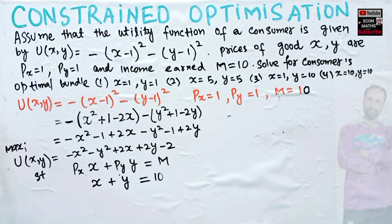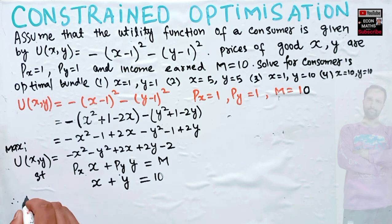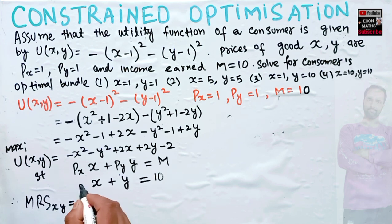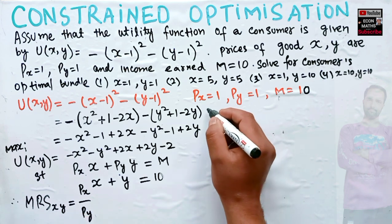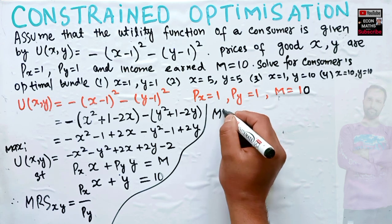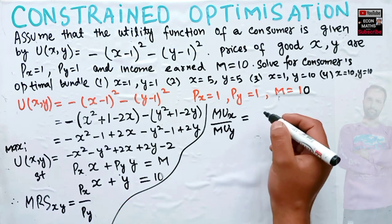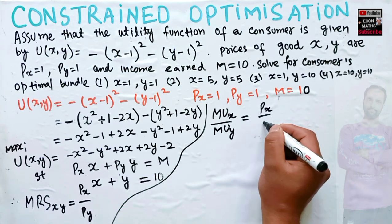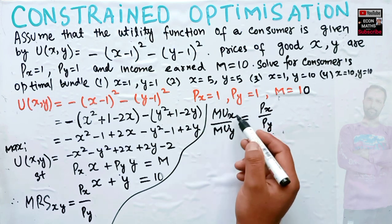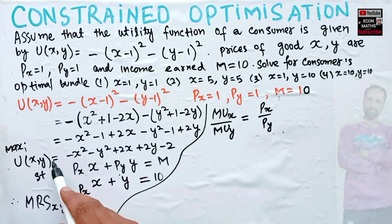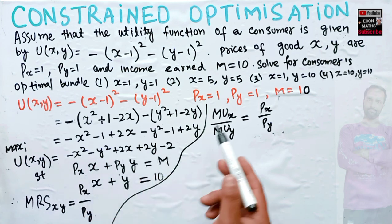To solve for the optimum, we use the tangency condition. The tangency condition states that the marginal rate of substitution between x and y should equal the ratio of their prices: MRS(x,y) = Px / Py. And MRS = marginal utility of x divided by marginal utility of y = Px / Py.